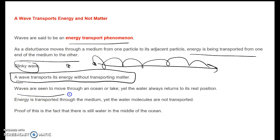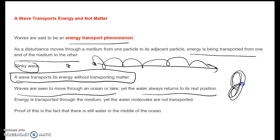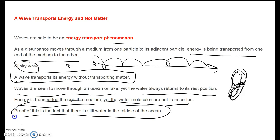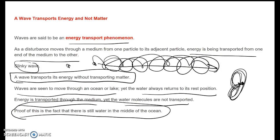Think about an ocean wave. Waves are seen moving through the ocean, but water always returns to its rest position — it always goes back. This is a circular wave; the particles go constantly in a circle but always return to their rest position. Even though energy is transported, the water molecules are not transported. The proof of that is if water moved with the waves, there'd be no water in the middle of the ocean. What happens is the energy passes through, and the particles pass it along in circles to the next particle. Waves transport energy, not matter — that's the key point.